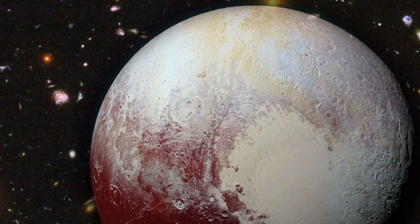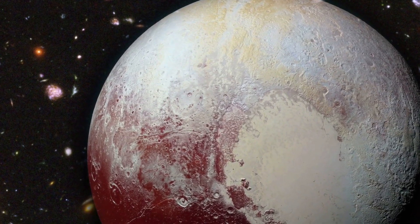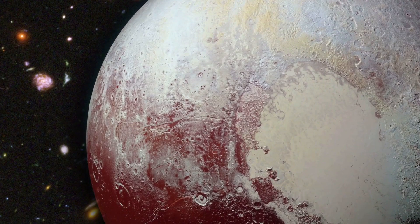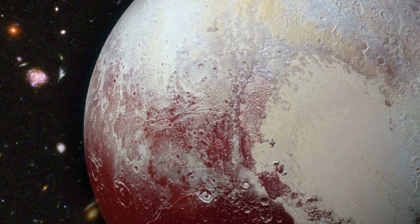Pluto's atmosphere is another area of great interest. It is primarily composed of nitrogen, with traces of methane and carbon monoxide. This thin atmosphere expands as it moves closer to the Sun. Understanding Pluto's atmosphere and surface helps in studying planetary atmospheres elsewhere, providing a comparative basis to better understand our own planet Earth.